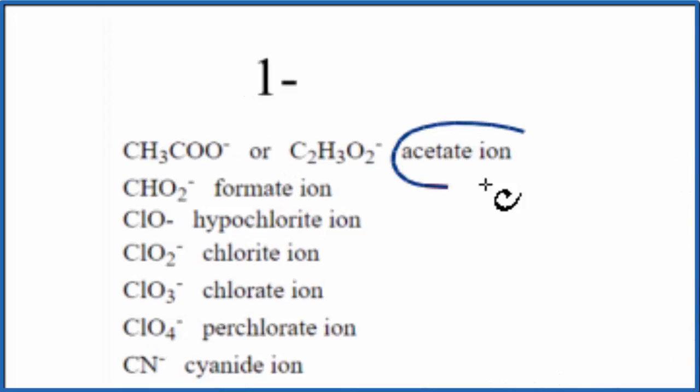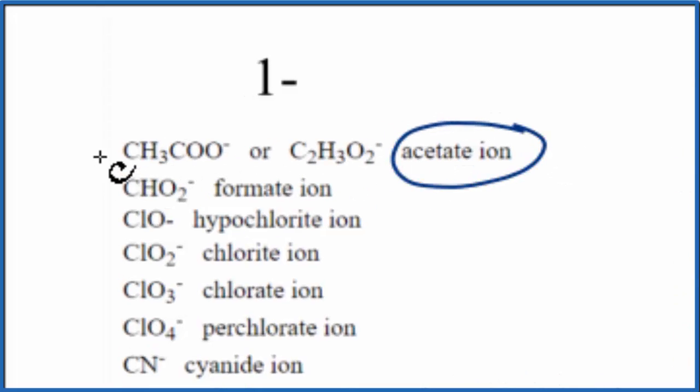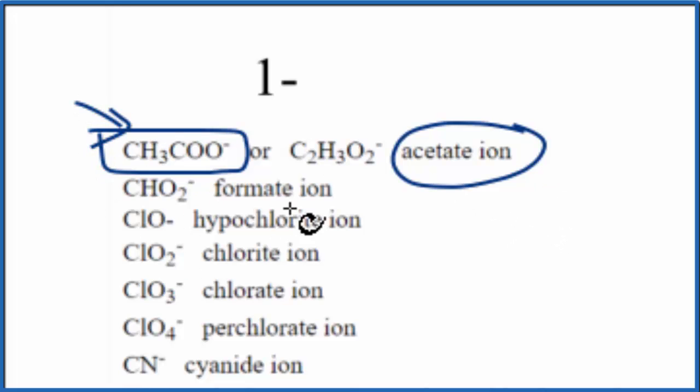So the acetate ion, right here, there's two ways you can write it. You can write it CH3COO-, or you can do the C2H3O2-, either way is correct, it's the same thing. Let's use this one right here, I think it's a little clearer.